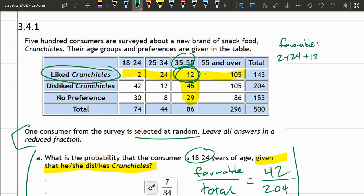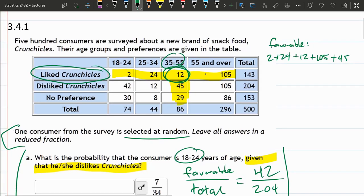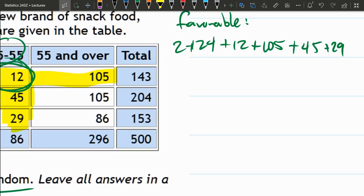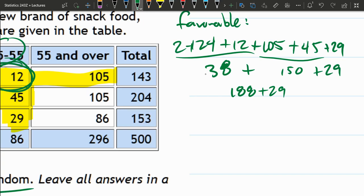2 and 24, 12, 105, 45, plus 29. Whatever that adds up to, that's the number of favorables right there. The total is 500. So I could do that divided by 500. Maybe I should add these up. 105 and 45, 150. 2 and 24 is 26. 38.